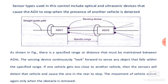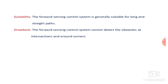There is a specified range or distance that must be maintained between AGVs. The sensing device looks forward to sense any object that falls within the specified range. If one vehicle gets too close to another, the sensor detects it and causes the rear vehicle to stop. Movement occurs again only when the obstacle is removed. The forward sensing control system is generally suitable for long, straight paths, but cannot detect obstacles at intersections or around corners.